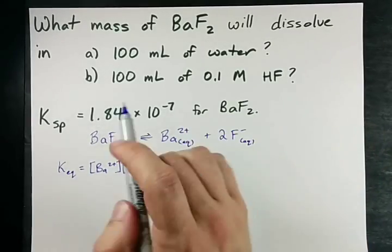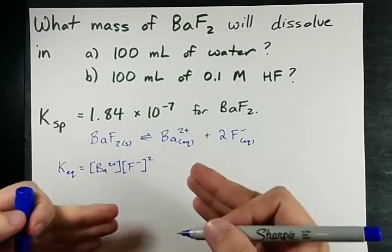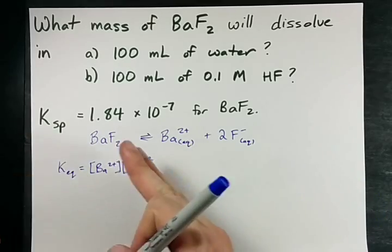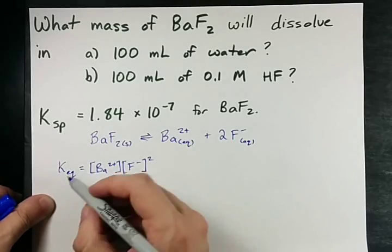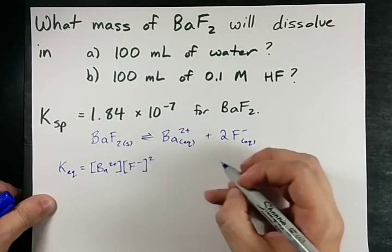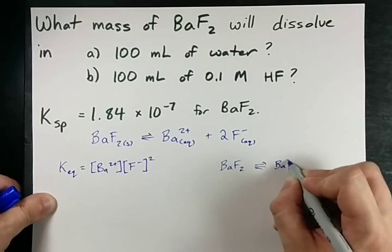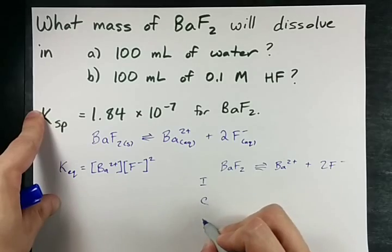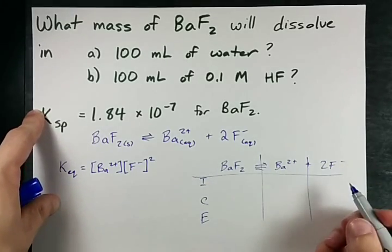We need to figure out what mass of BaF2 will dissolve in this amount of water. The way we're going to do this is figuring out where the equilibrium for this reaction lies. What I mean is we're going to need to do an ICE table. BaF2 dissolving to give Ba2+ and two F minus. I'm going to make an ice table.